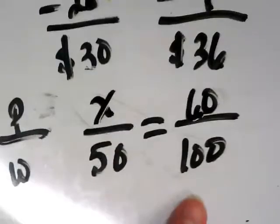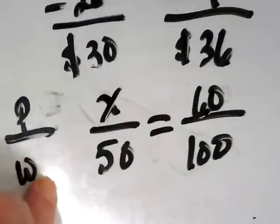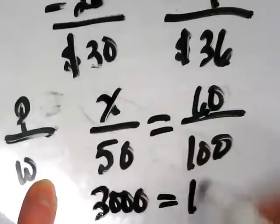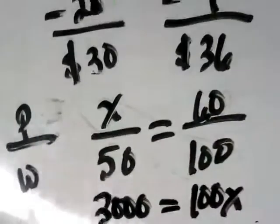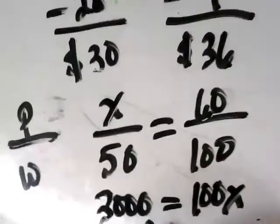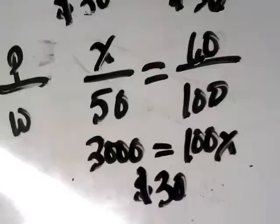And now it's not going to be the discount, it's going to give us how much we're paying. This is going to give us the sale price. We cross multiply 60 times 50, 3000, is equal to 100x. 3000 divided by 100 is going to give us 30, which is what we got when we did the 10% times 4, right?